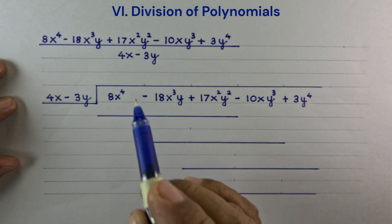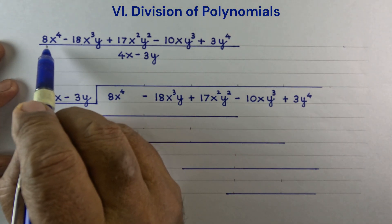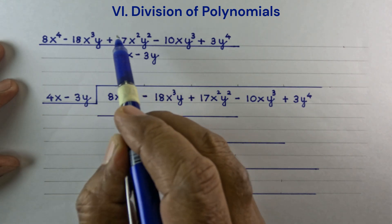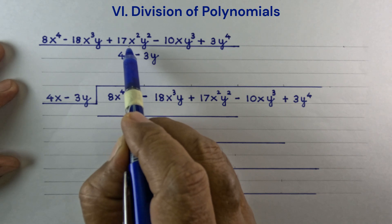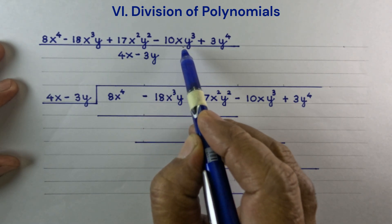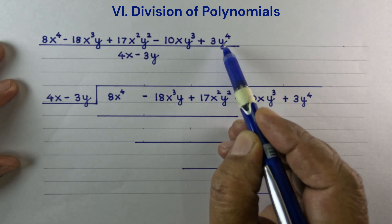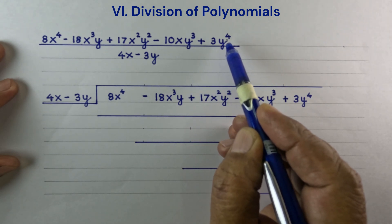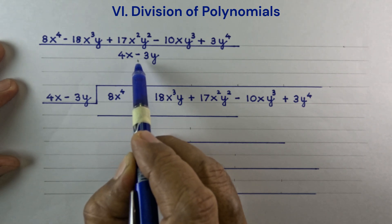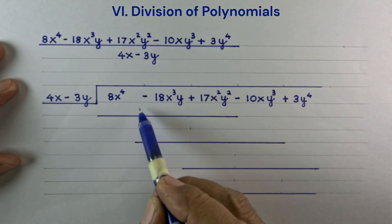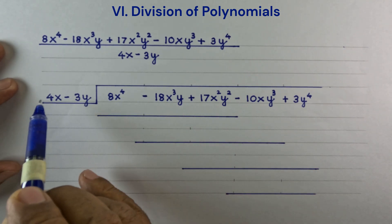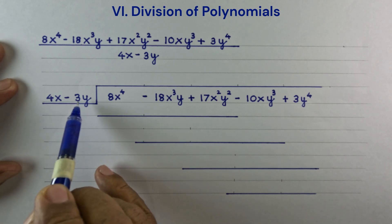Let's get the quotient of this polynomial: 8x to the 4th minus 18x cubed y plus 17x squared y squared minus 10xy cubed plus 3y to the 4th, divided by the binomial 4x minus 3y. This is the dividend, and this is the divisor.